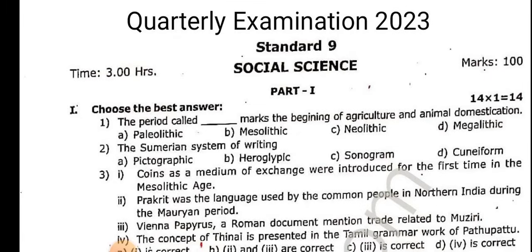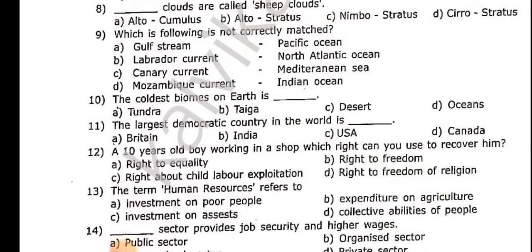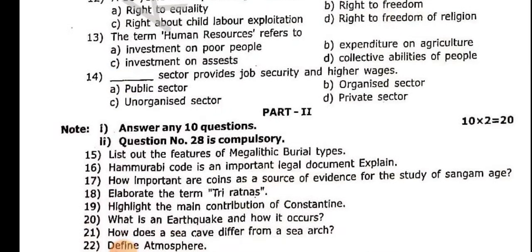First, you will get the best answer. The period that marks the beginning of agriculture and animal domestication. You will get the first 14 one-word answers. Here, we will talk about 10 questions and follow. That's the question — questions are 28.